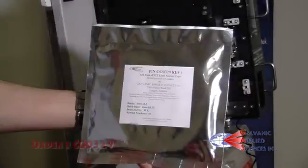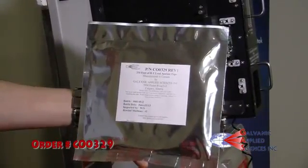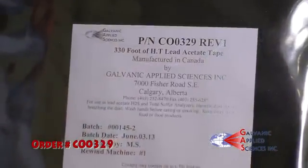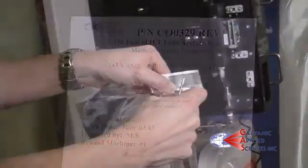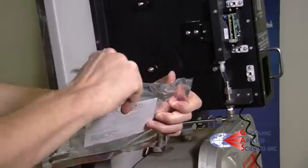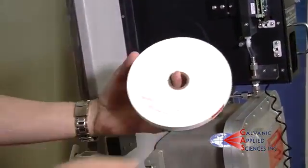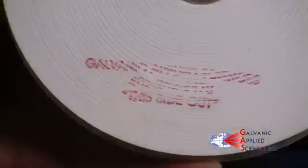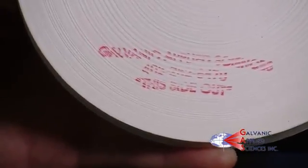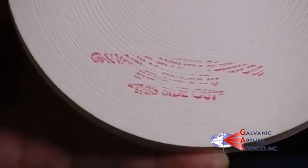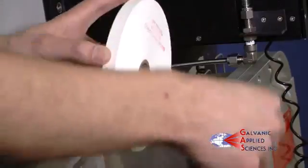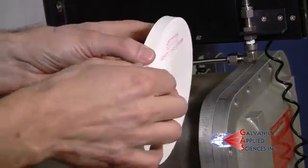Take a new package of Galvanic Applied Sciences lead acetate tape. Remove the tape from the package and make sure the stamp is facing away from the analyzer. Disregard the outermost layer of tape as it can leave a mark that will cause a bad analysis.